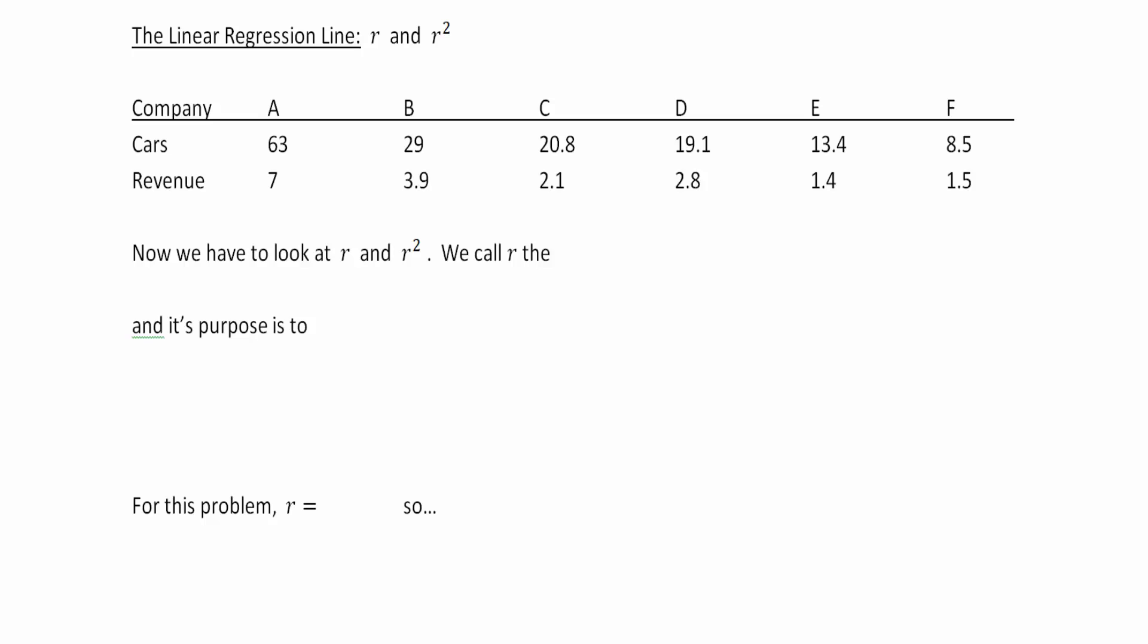So we call R the correlation coefficient. Your book will be using those words and so will your online homework. If we're talking casually in class we're going to talk about R. The correlation coefficient, its purpose is to show a numerical strength or weakness between x and y.